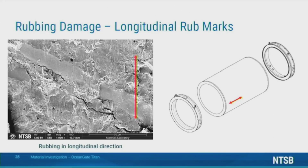Does this indicate that fore and aft there was some kind of rubbing damage between the layers of the carbon fiber? So essentially we're evaluating the features that are on this fracture surface, and the linear features that are aligned with the red arrow are not consistent with the types of fractures that we would typically see.